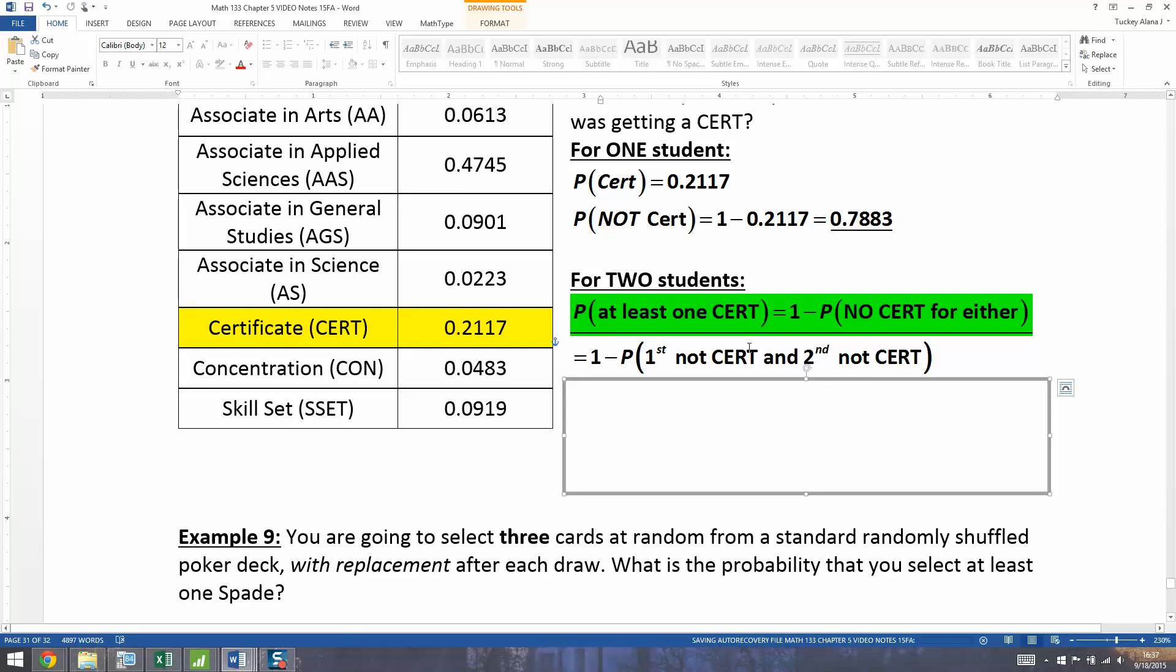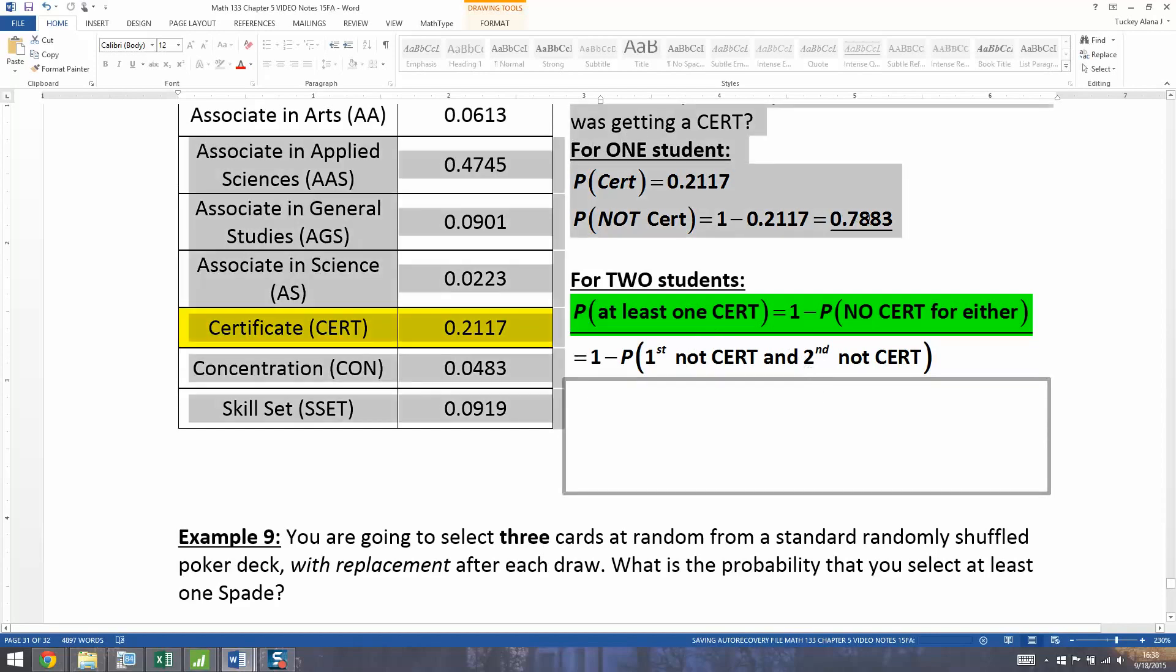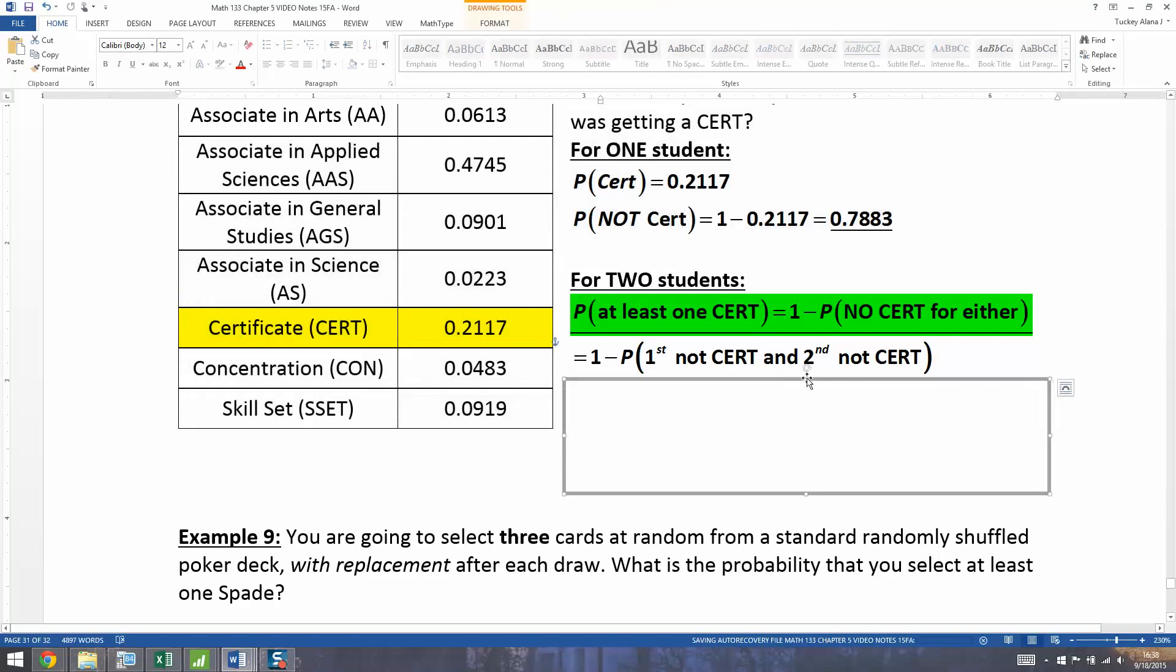Once you're dealing with two students, two rolls of the roulette wheel or spins of the roulette wheel, two cards chosen at random, whatever, once you're dealing with multiples like that, it has to be the multiplication rule. And for our purposes at this point, it's going to be independent. All right, so what are the chances the first one is not a certificate? Well, you found up here the probability that any one student is not getting a certificate. It's 0.7883. So you're going to multiply the not getting certificate for the first student times not getting a certificate for the second student right there.